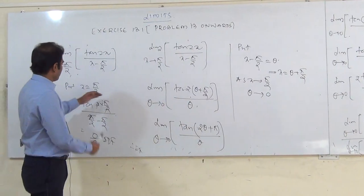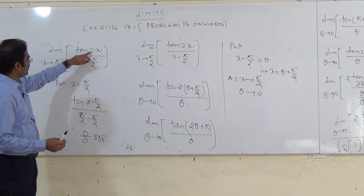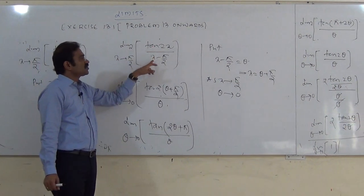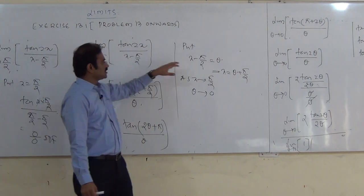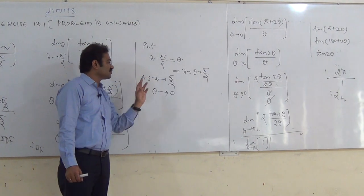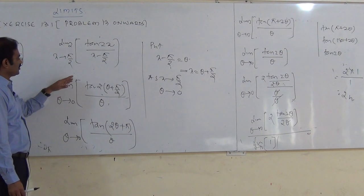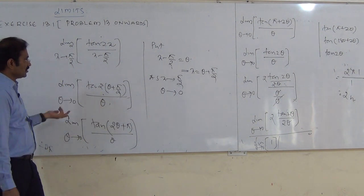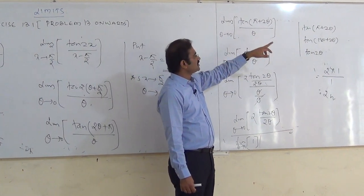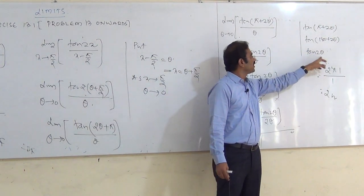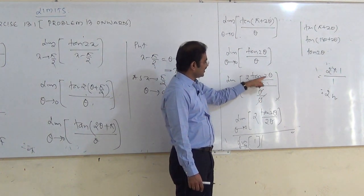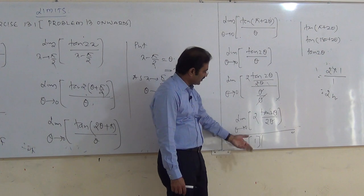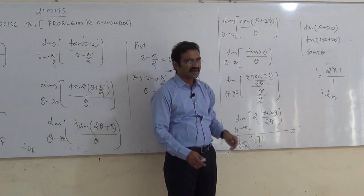Recap: put x = π/2 gives tan(π)/(0) = 0/0 — IDF. Put x − π/2 = θ, x = θ + π/2, θ tends to 0. Expand: 2(θ + π/2) = 2θ + π, and tan(π + 2θ) = tan(2θ). Divide by θ, multiply and divide by 2; apply limit: tan(2θ)/(2θ) → 1, constant 2 stays. The answer is 2.